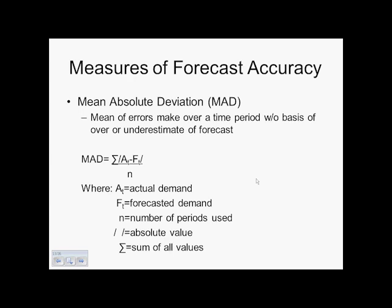And the formula for MAD is the sum of the actual forecast for a time period minus the forecasted demand for a time period divided by n, which is the number of time periods we're looking at.